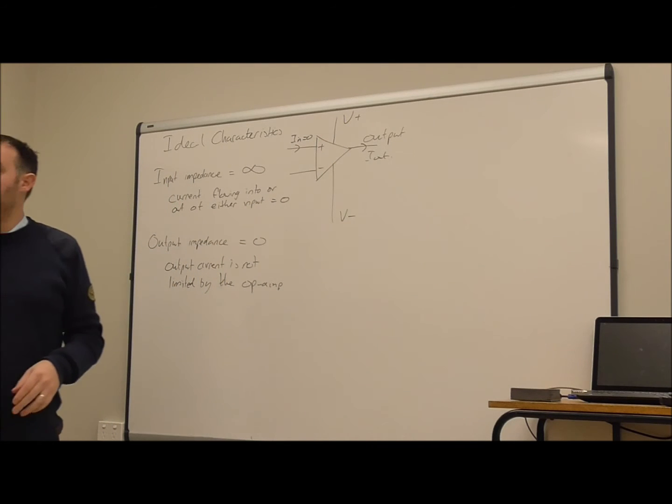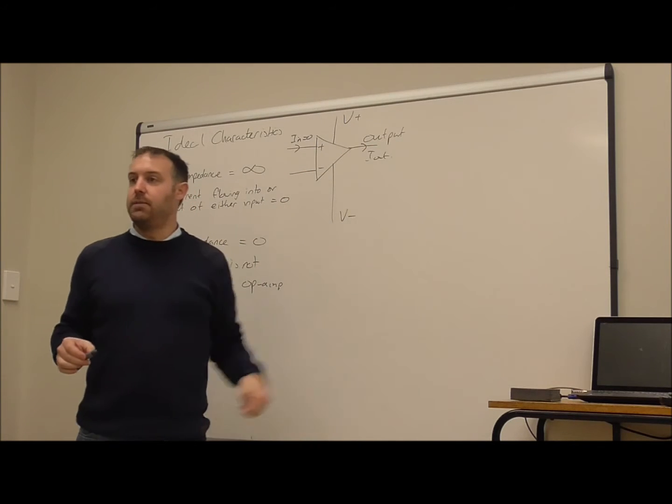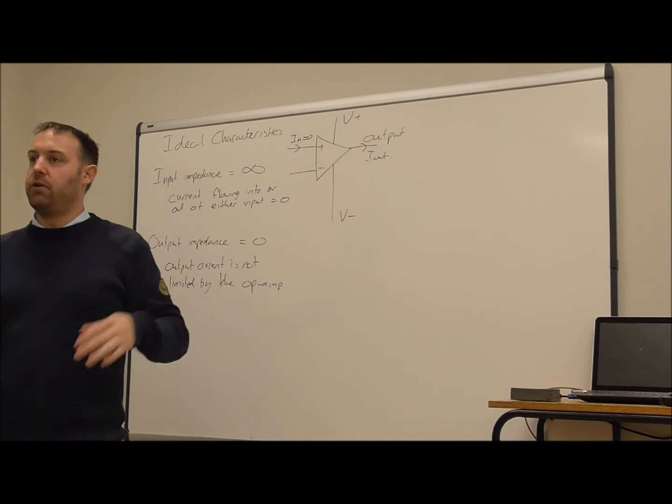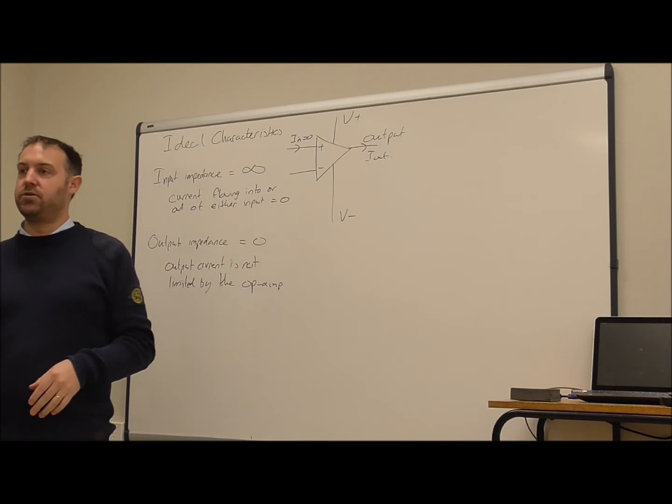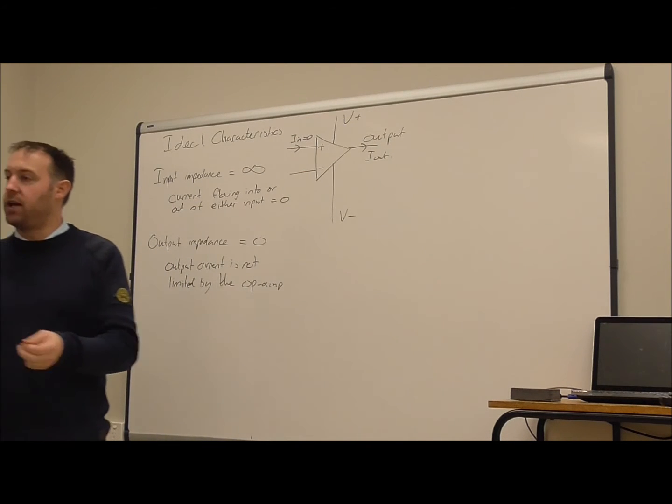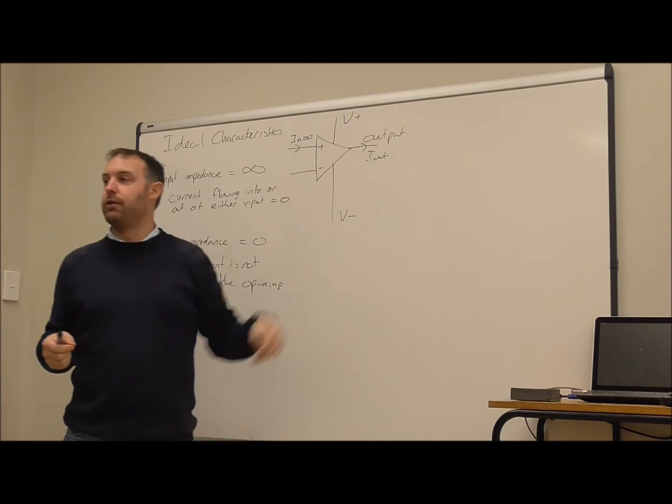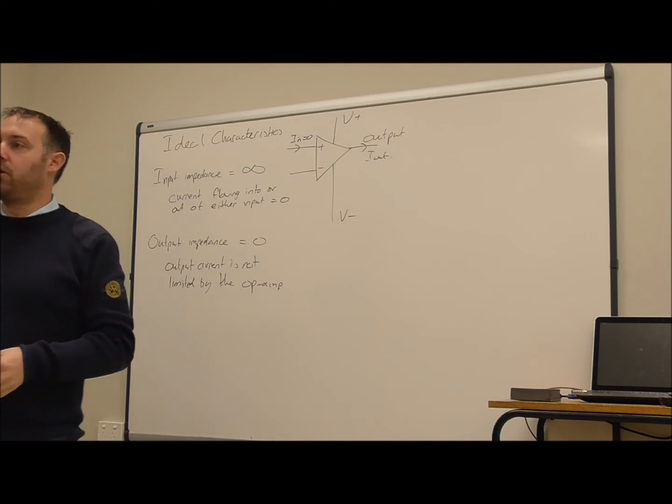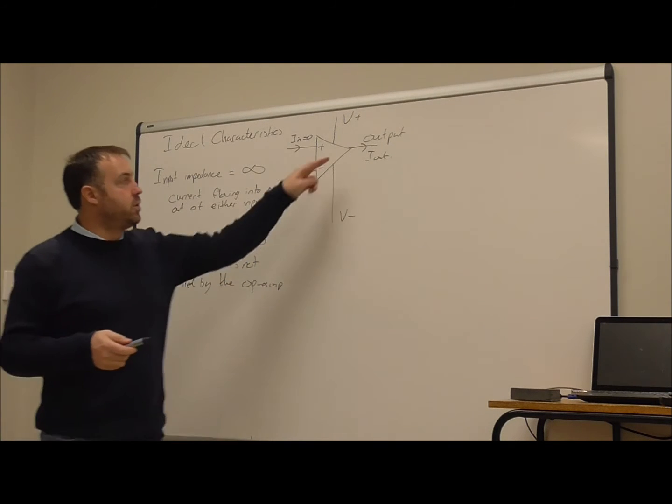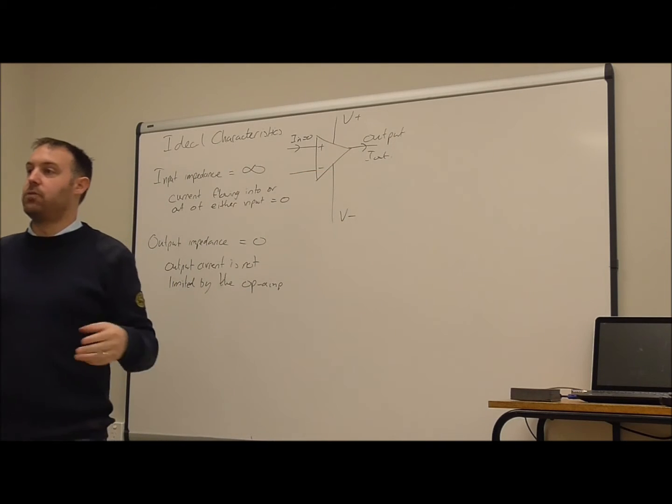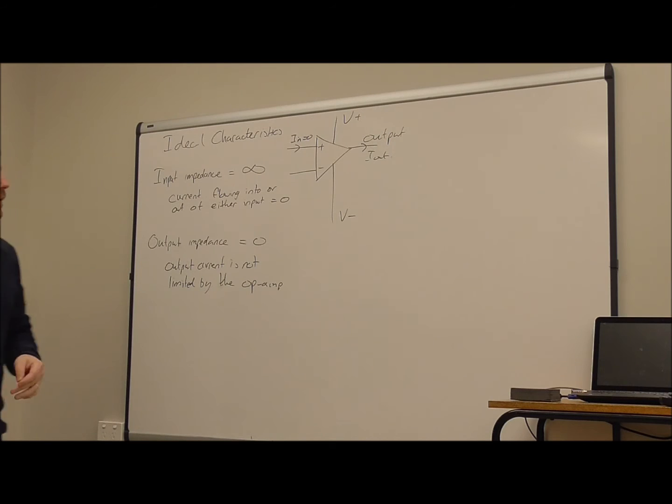So you might have noticed when you're doing your experiments that when you had an LED on the LM741, the output voltage with a supply voltage of about 9 volts, the output voltage maybe 6 or 7 volts. But when you took that LED off and had no output current there, then that output voltage jumped up to about 8 or 8.5 volts. And so what you're seeing is the effect of the output impedance reducing that output voltage when there's a current flowing through it.